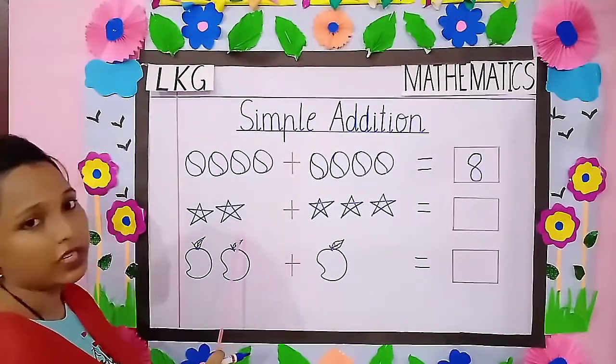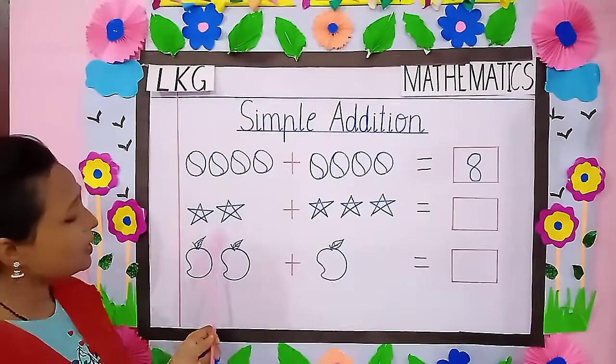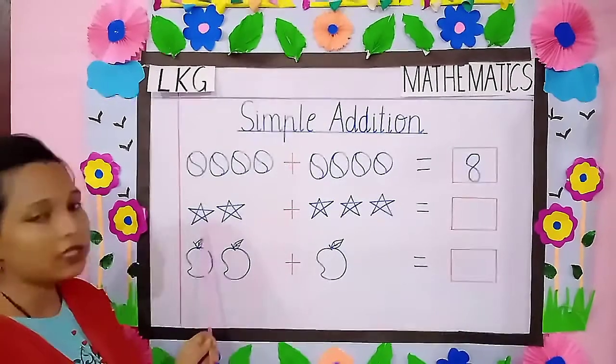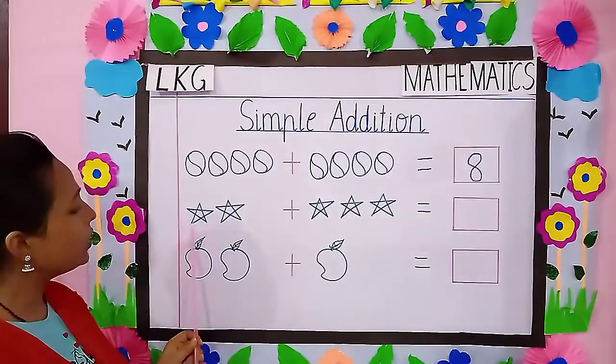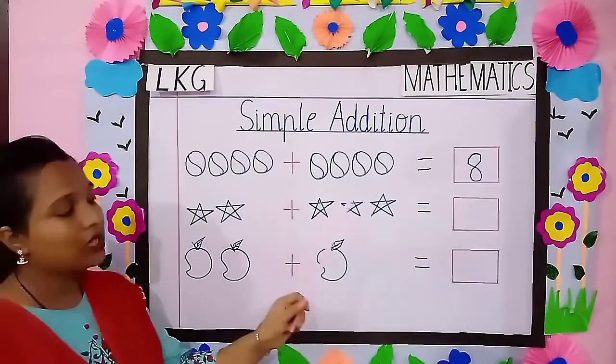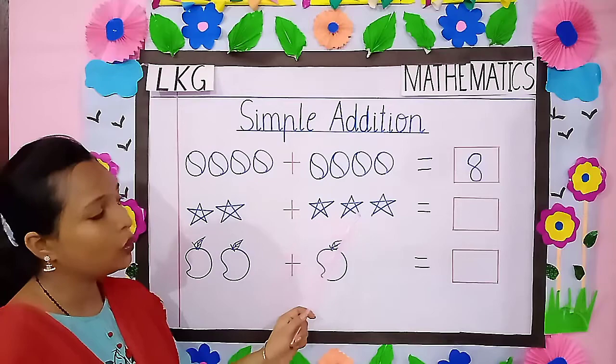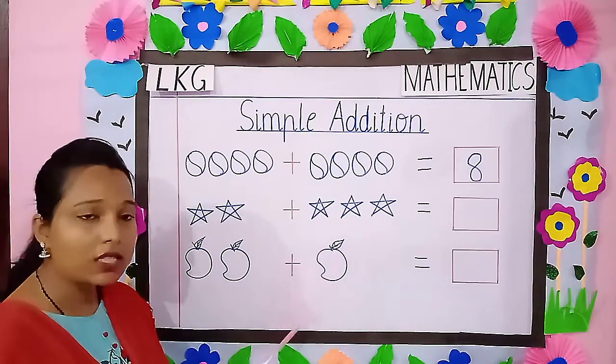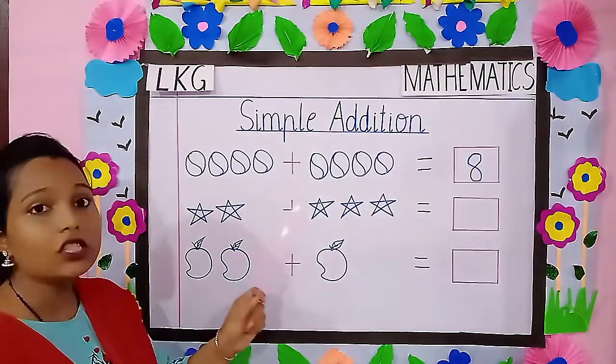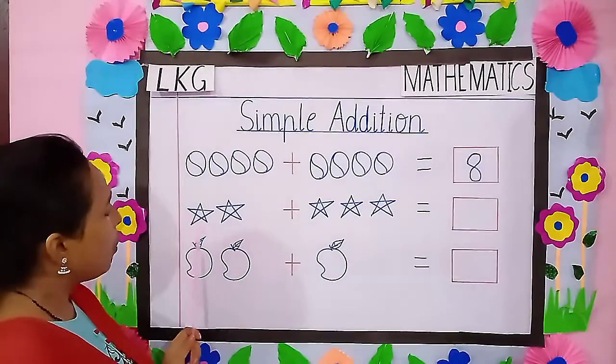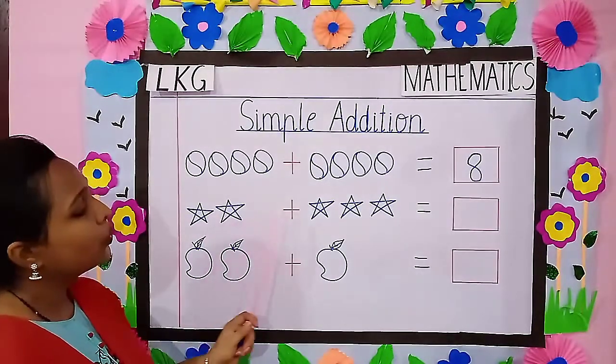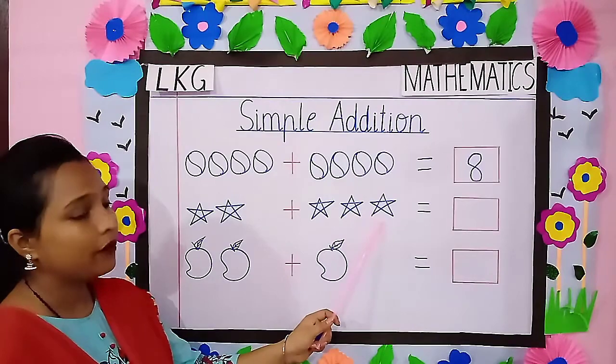Now we move to the next object. Now how many stars are here before the plus sign, children? 1, 2. And how many stars are there after the plus sign? 1, 2, 3. Now let us count all the stars together. 1, 2, 3, 4, 5.